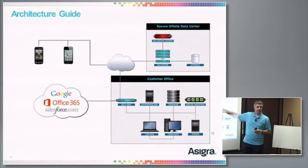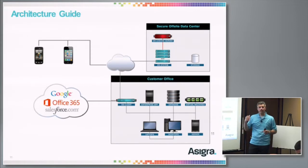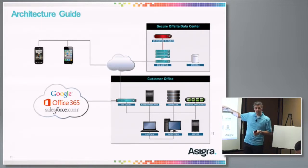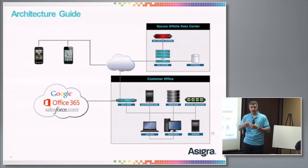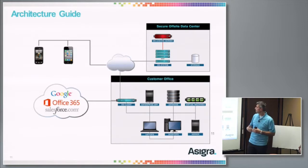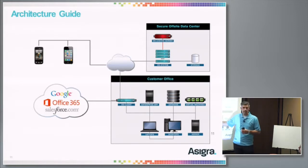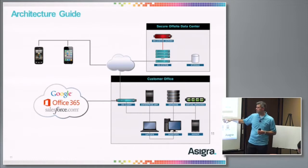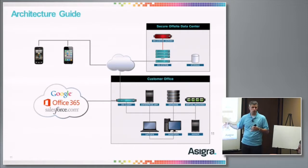The second part of it is the DS system. The DS system is the multi-tenant server that receives requests for restores and accepts the data that's being backed up to it. Then there is the DS client. The DS client is the component that sits behind the firewall.